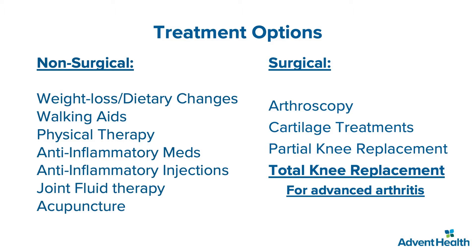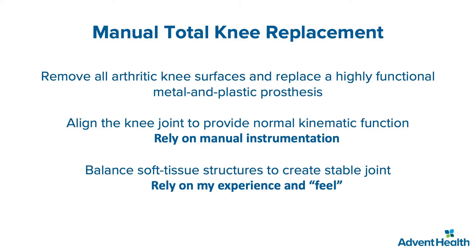For advanced arthritis, we have traditionally gone to what we would term a manual knee replacement. A manual knee replacement is done with a series of guides and jigs fashioned in surgery to remove the arthritic knee surfaces and place a metal-on-plastic prosthesis. The realignment is based upon the surgeon's skill, judgment, accuracy of instrumentation, and relies on the surgeon's experience and feel for the optimal result.